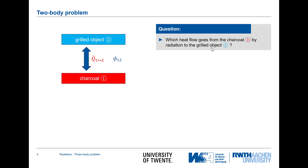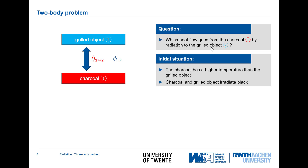What do I mean by easy-going assumptions? All the objects that I'm considering are considered to be black radiators. The situation here is as follows: I have charcoal which is glowing, there is something that's going to be grilled, and of course the charcoal has a much higher temperature than the grilled object. There are geometrical considerations taken care of by view factors, and I've got the radiative exchange between one and two.